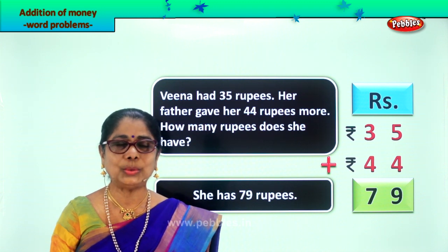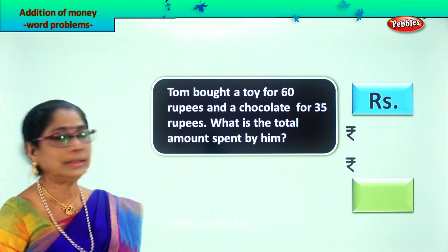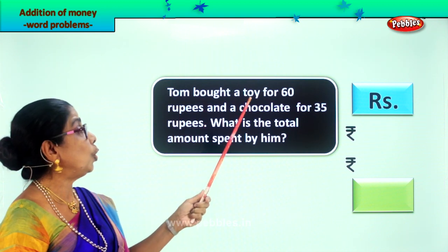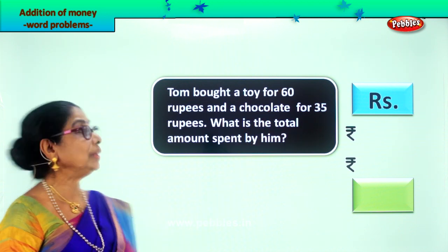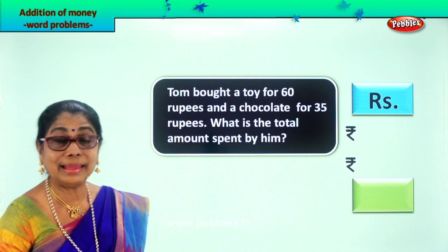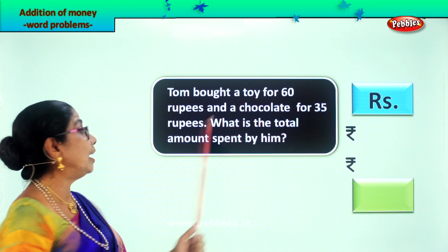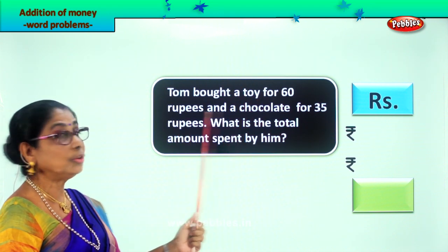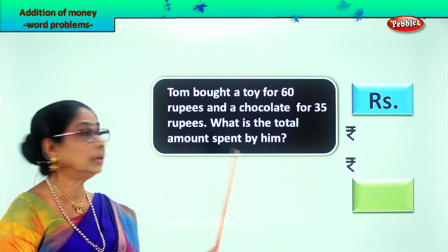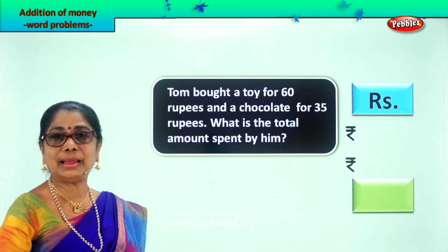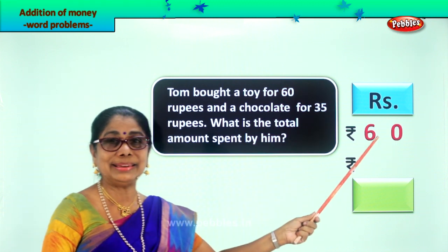Let's take another word problem and enjoy working together. Tom bought a toy for 60 rupees and a chocolate for 35 rupees. What is the total amount spent by him? So how much money did he spend buying a toy and a chocolate? Amount spent on a toy: rupees 60.